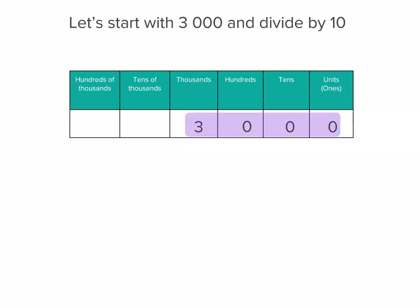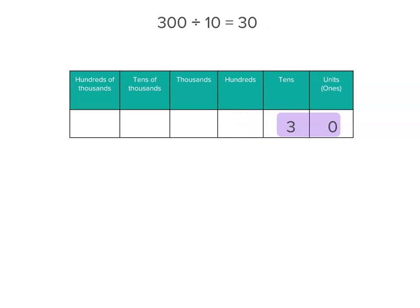You can see the digit 3 moves one place to the right to the hundreds place. The 0s also move to the right, but you can't really notice that as much. So 3,000 divided by 10 equals 300. 300 divided by 10 equals 30. And 30 divided by 10 equals 3. So the digits move to the right.